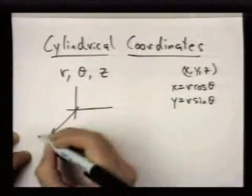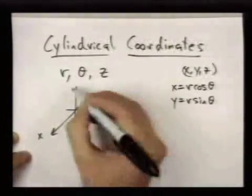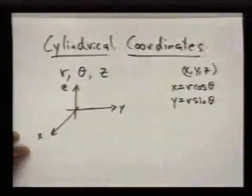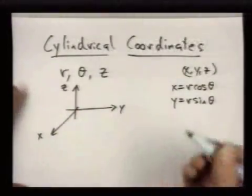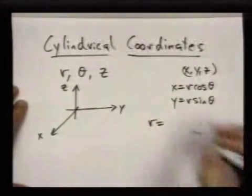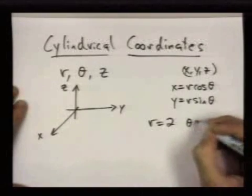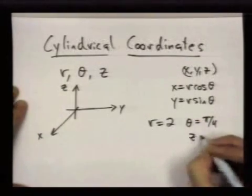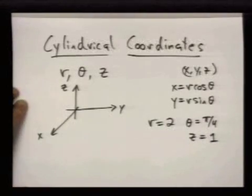Let me say what I mean by that. Let me give you a specific number in mind. So if I say r = 2, and θ = π/4, and z = 1.